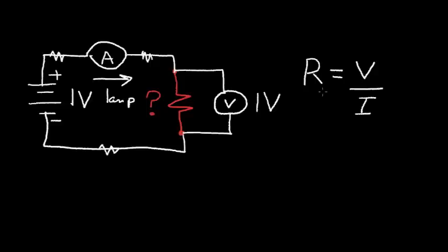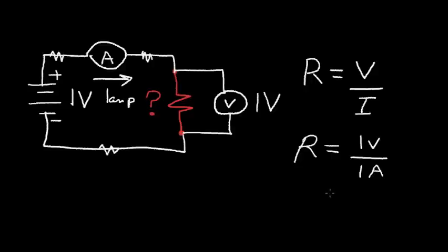In this case, I can calculate my resistance: R is equal to 1 volt across the resistor divided by 1 amp through the resistor, which is equal to 1 ohm. We use the Greek symbol Omega to denote ohms.